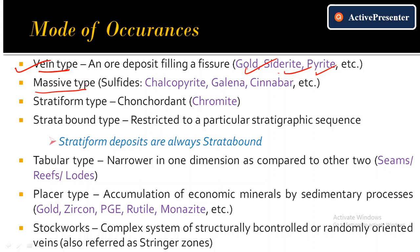Massive deposits are those of large extent. Sulfide ores generally occur as massive type ore deposits — for example, chalcopyrite (copper ore), galena (lead sulfide, lead ore), and cinnabar (mercury sulfide, mercury ore). Siderite and pyrite are iron ores. These sulfide minerals are typical examples of massive type deposits.